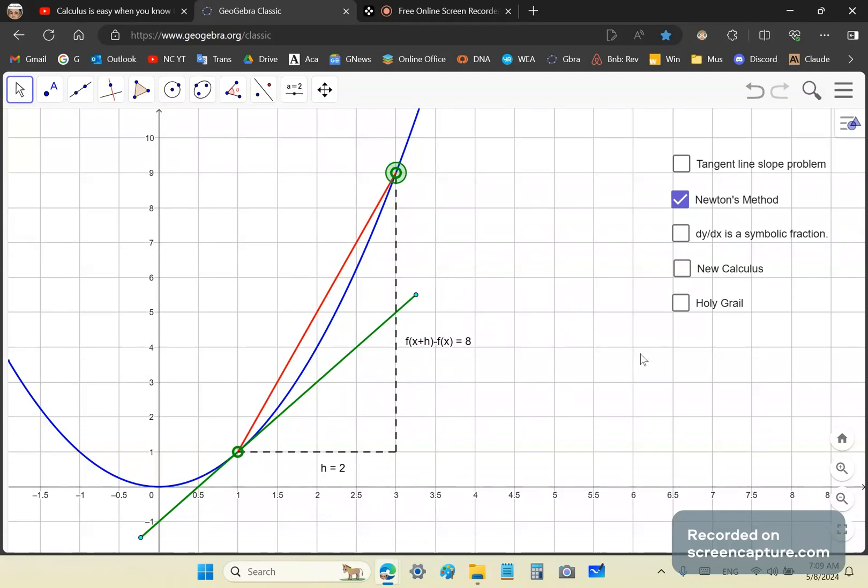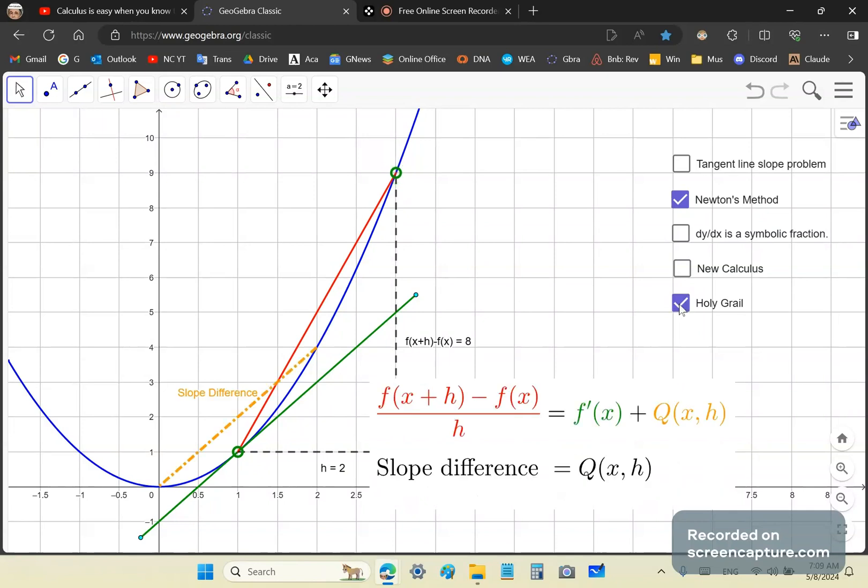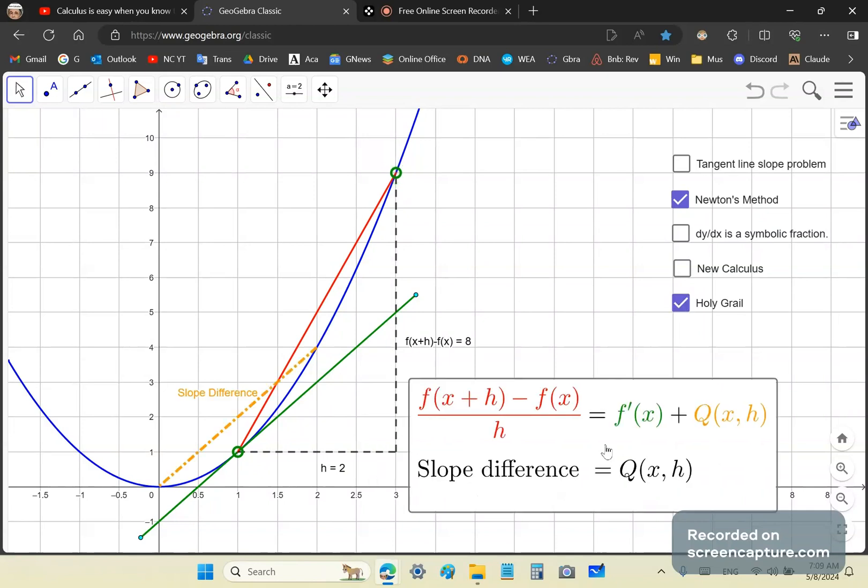Because when you take this finite difference, as you'll see in the holy grail of calculus, in this expression here you'll see that it doesn't matter that he's doing this because we can just ignore the slope difference.